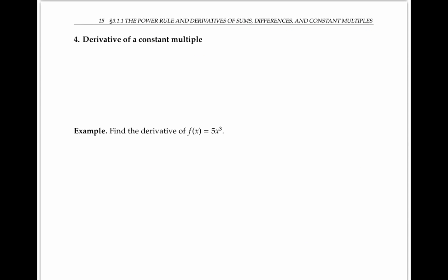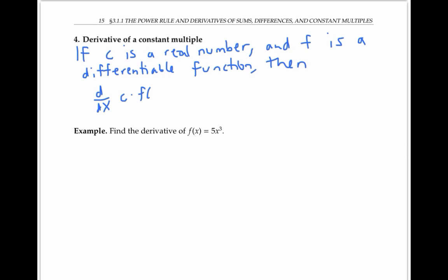The constant multiple rule says that if c is a constant real number, and f is a differentiable function, then the derivative of c times f(x) is just c times the derivative of f(x). In other words, when we take the derivative, we can just pull a constant outside of the derivative sign.